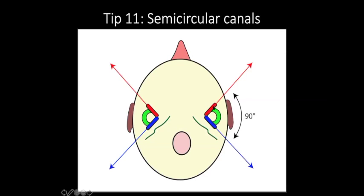The superior semicircular canal is at a higher plane and is also vertically oriented, but it is perpendicular to the posterior surface of the temporal bone — whereas the posterior semicircular is parallel. In between, we have the lateral semicircular canal, which is horizontally oriented and parallel to the lateral surface of the mastoid or parietal bone. If you remember these relationships, you will never fail to identify any semicircular canal in the future.